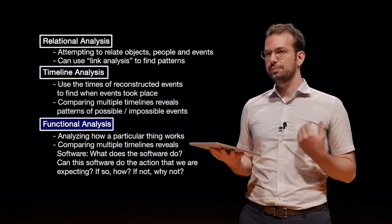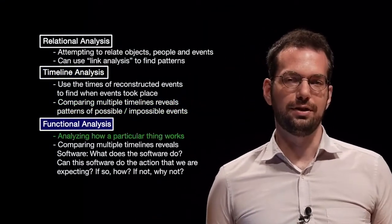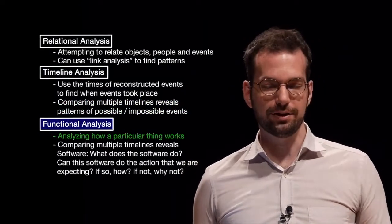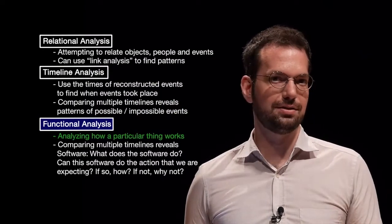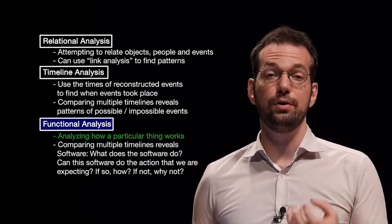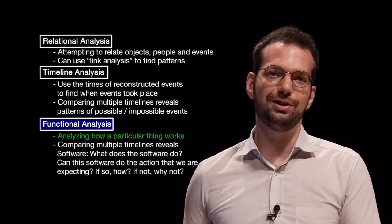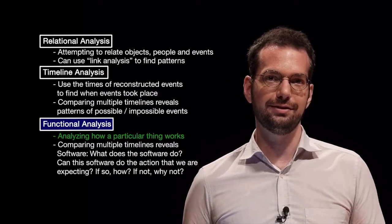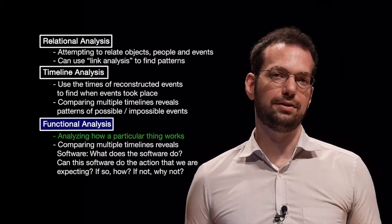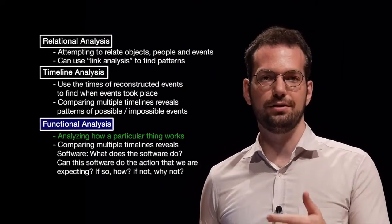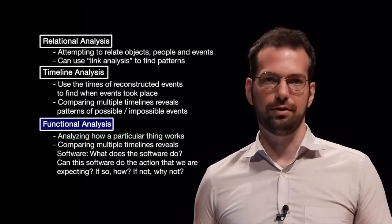There's also functional analysis — basically analyzing how a particular thing works. The best example is malware analysis. We want to analyze how a piece of malware is working, what it's doing to the system, and what its functions are. Once we understand its functions, we can understand what it's actually trying to do. That function can potentially lead us to other servers or other devices. Using relational analysis, we can connect them and potentially lead back to suspects, just based on the functions of that particular piece of malware or software.